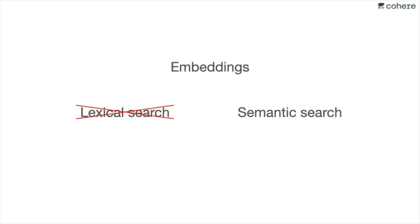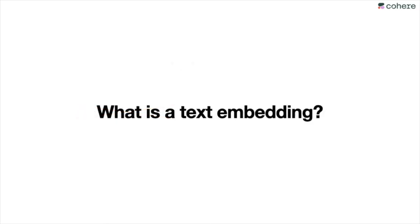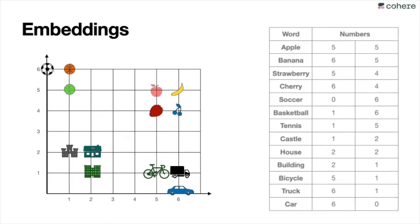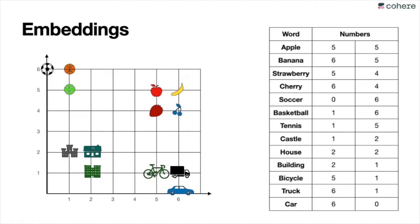In the description, there's a blog post and a video which describe embeddings in more detail. But briefly, a text embedding works like this: you have words — apple, banana, strawberry, all the way to car — and you assign two numbers to each one: the horizontal coordinate and the vertical coordinate. For example, banana has coordinate (6, 5). The key idea is that similar words have similar points in the embedding, so fruits are close together, houses are close, sports are close, and vehicles are close. Of course, a real embedding has many more numbers — sometimes thousands — but that's the idea.